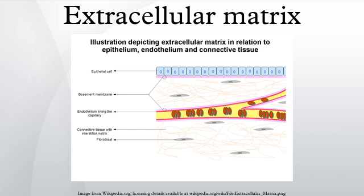Extracellular matrix cells have been found to cause regrowth and healing of tissue. In human fetuses, the extracellular matrix works with stem cells to grow and regrow all parts of the human body, and fetuses can regrow anything that gets damaged in the womb. Scientists have long believed that the matrix stops functioning after full development.